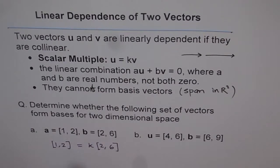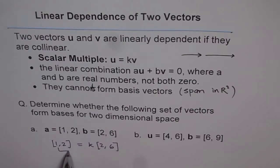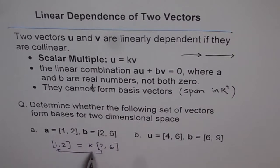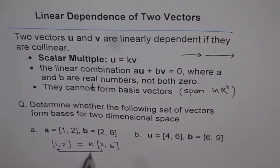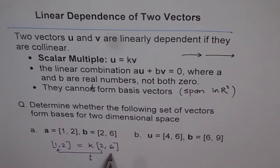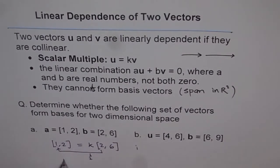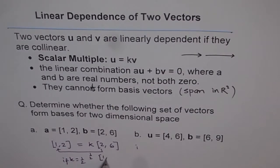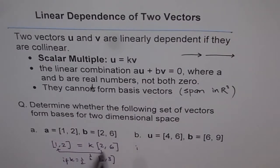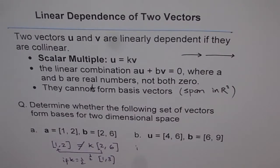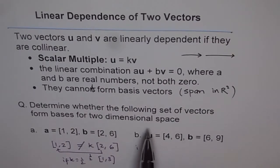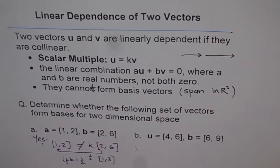If we want to get 1 out of 2, then k should be one-half. But if k is one-half, then k times (2, 6) produces (1, 3), not (1, 2). So if k equals one-half, we get (1, 3) and not (1, 2). Therefore these vectors are not collinear. Since they are not collinear, they will form a basis for two-dimensional space. So the answer here is yes.